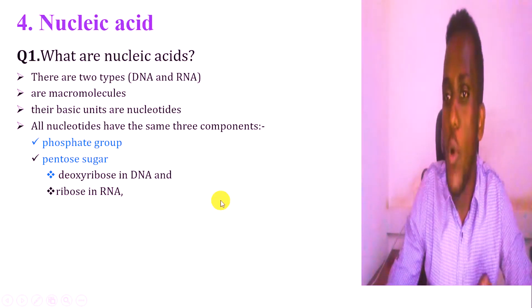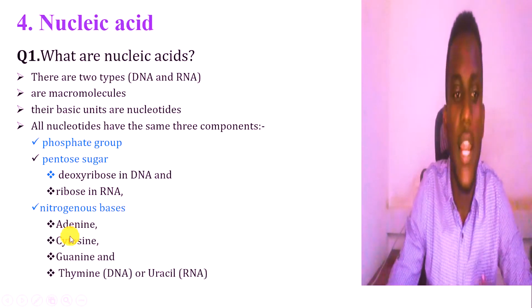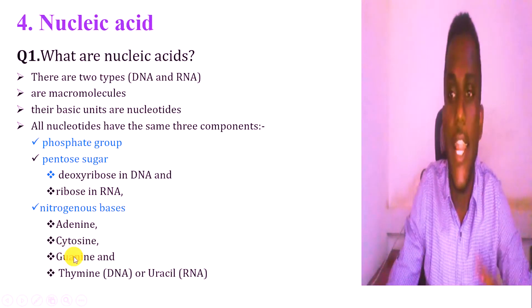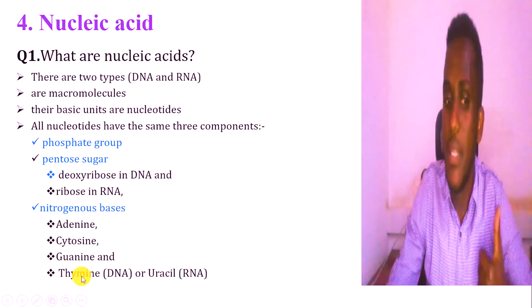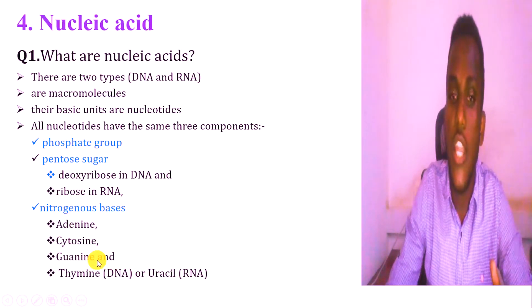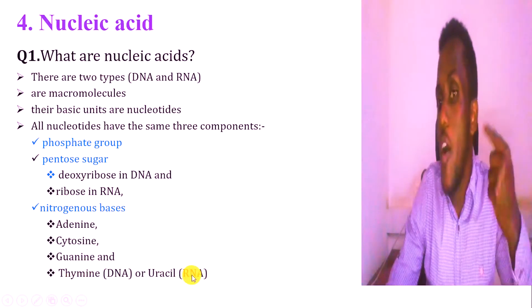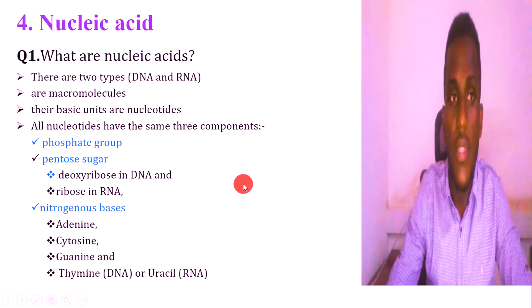This is the nucleotide component. DNA is composed of nitrogen bases. This is the nitrogen base. The nitrogen base is found in DNA and RNA. Adenine, cytosine — DNA and RNA include adenine, cytosine, thymine, and uracil. The structure of adenine looks like this. The uracil structure is this one, then cytosine, thymine, and adenine.